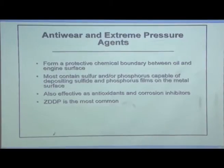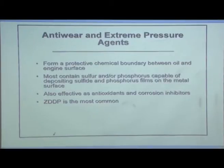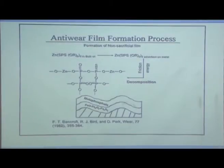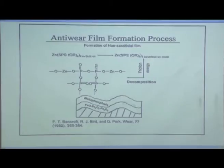Anti-wear and extreme pressure agents form a protective chemical boundary between the oil and the engine surface. Most contain sulphur and phosphorus capable of depositing sulphides and phosphorus films on the metal surface. They are also effective as antioxidants and corrosion inhibitors. ZDDP is the most common additive used in most applications — a wonder compound. The anti-wear film formation process on iron surfaces involves a meta-phosphate layer forming on the surface.